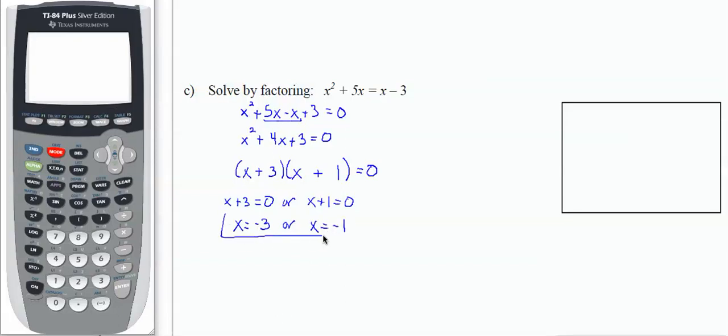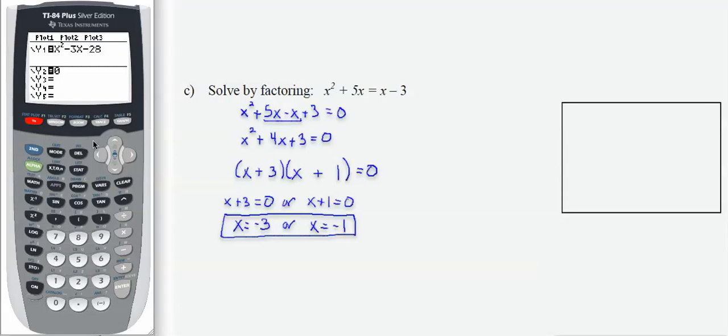Those should be my solutions to the original quadratic, but let's double check by graphing. If I go to y equals and clear y1, y2 should be set to 0. I'm going to enter this part here, x squared plus 4x plus 3. And then the equals 0 part is here.